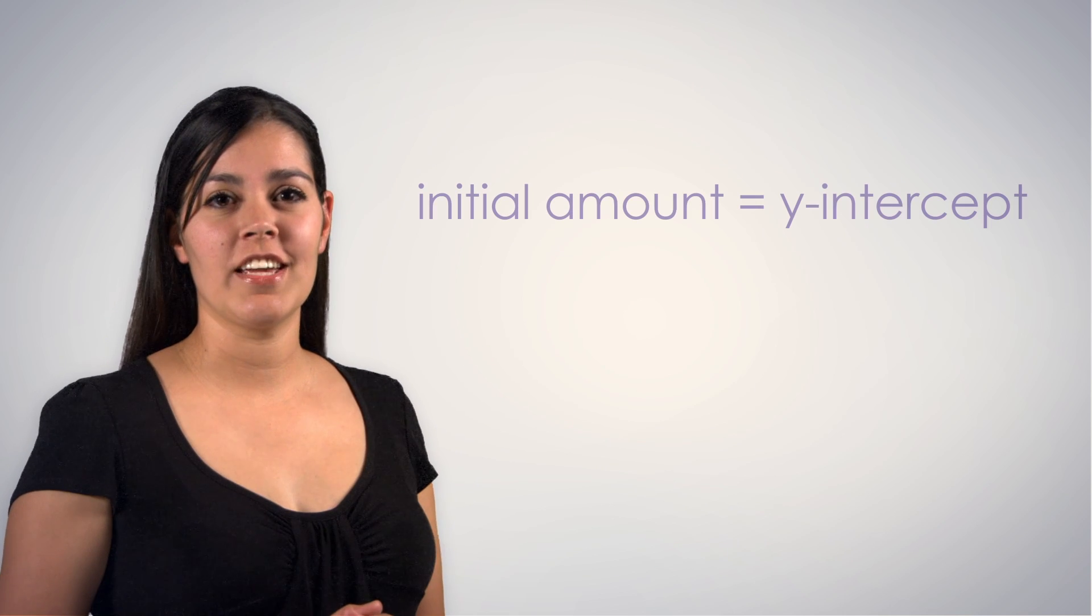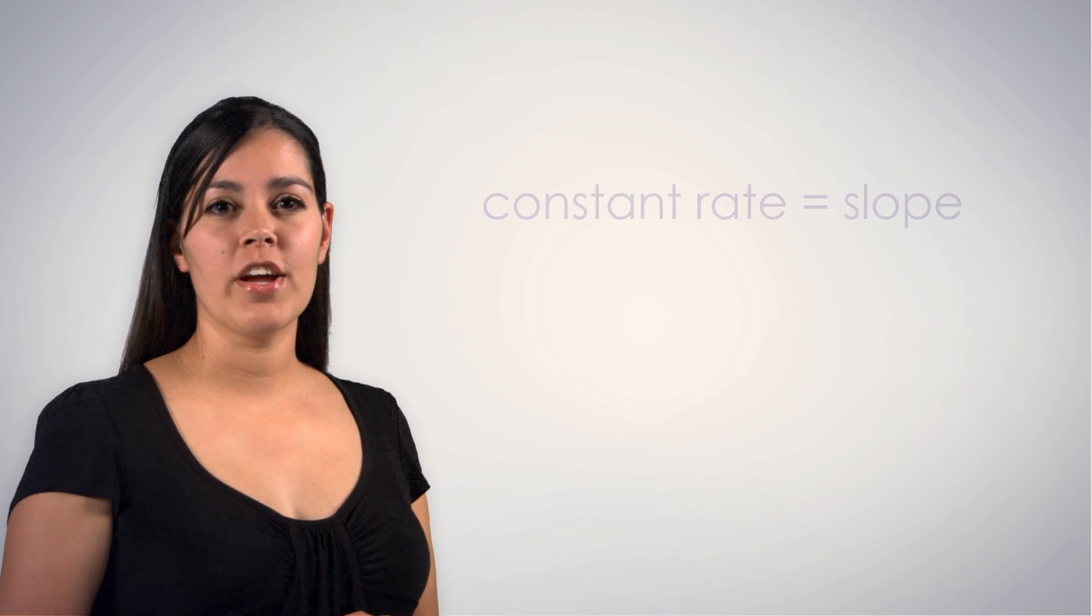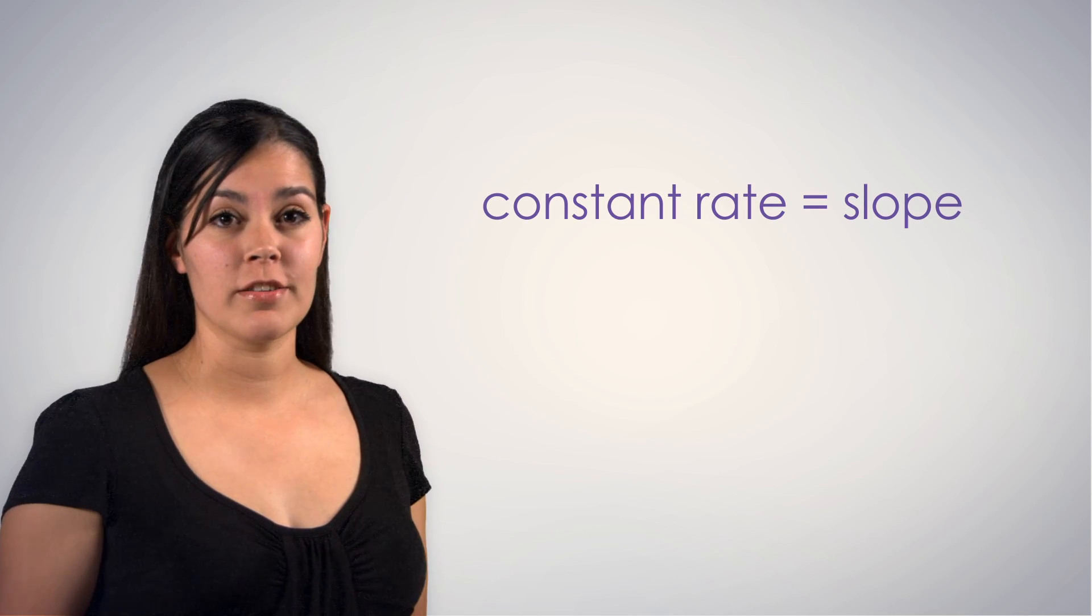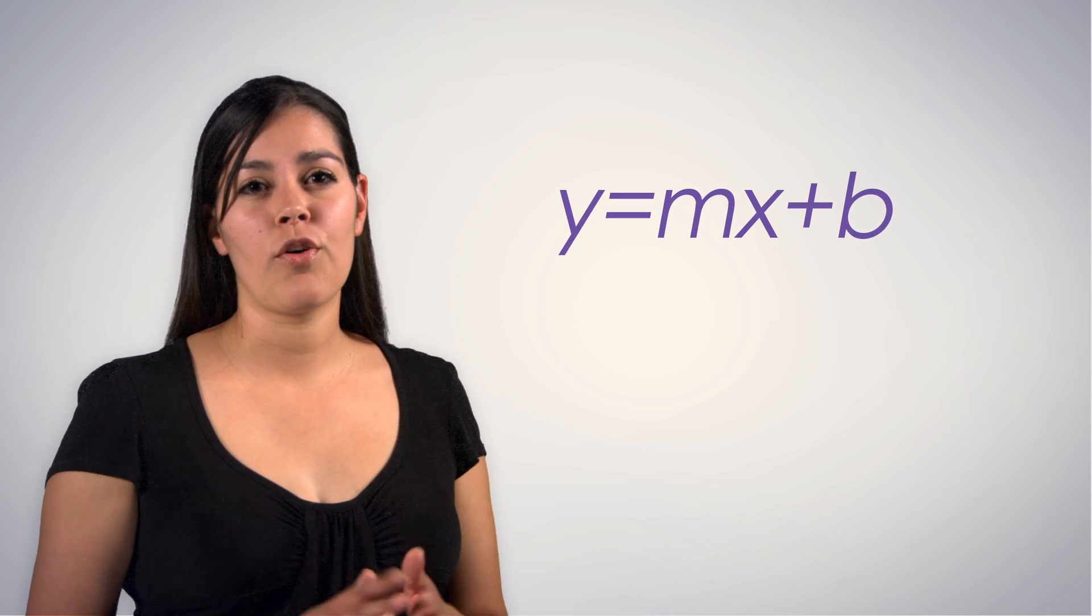In this video, we learned that the initial amount and y-intercept are the same, and that the constant rate of change and slope are also the same. Finally, we discovered the value of y equals mx plus b, and how its form can quickly help us make a graph. In the next video, we will focus on rewriting linear functions into the slope-intercept form, and writing a function represented in a graph.